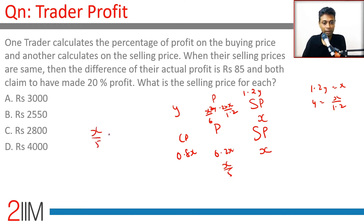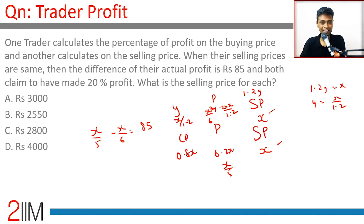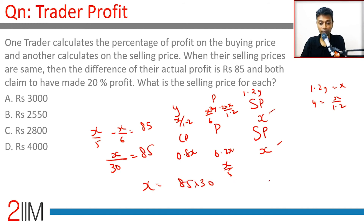So x/5 minus x/6 equals 85. Quick recap: selling price is x in both cases. Where profit is calculated incorrectly, profit = 0.2x and cost price = 0.8x. Where calculated correctly, cost price = x/1.2 and profit = x/6. The difference x/30 = 85, so x = 85 × 30 = 2550. The answer is choice B.